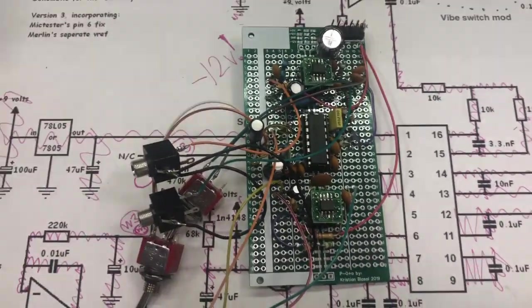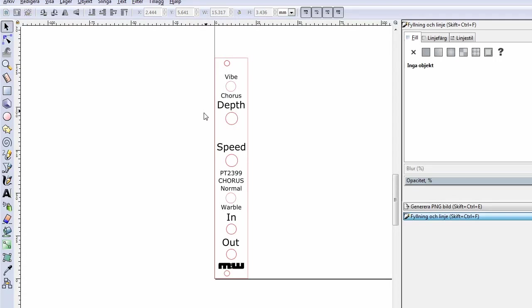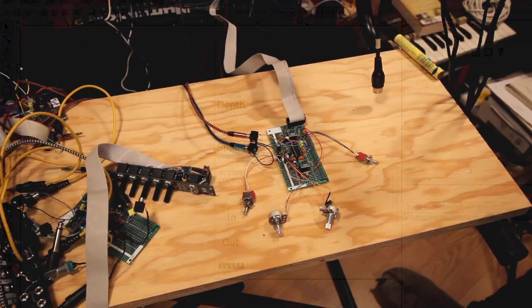It will look something like this. I chose this design - the depth and speed potentiometers, the vibe chorus switch I put on top, and the warble and normal I put down here, and then the in and out. Quite compact but should work just fine.